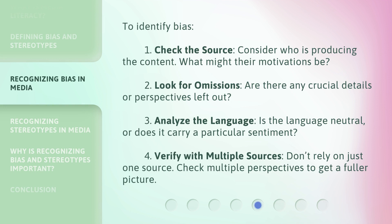To identify bias: 1. Check the source — consider who is producing the content and what their motivations might be. 2. Look for omissions — are there any crucial details or perspectives left out? 3. Analyze the language — is the language neutral, or does it carry a particular sentiment? 4. Verify with multiple sources — don't rely on just one source; check multiple perspectives to get a fuller picture.